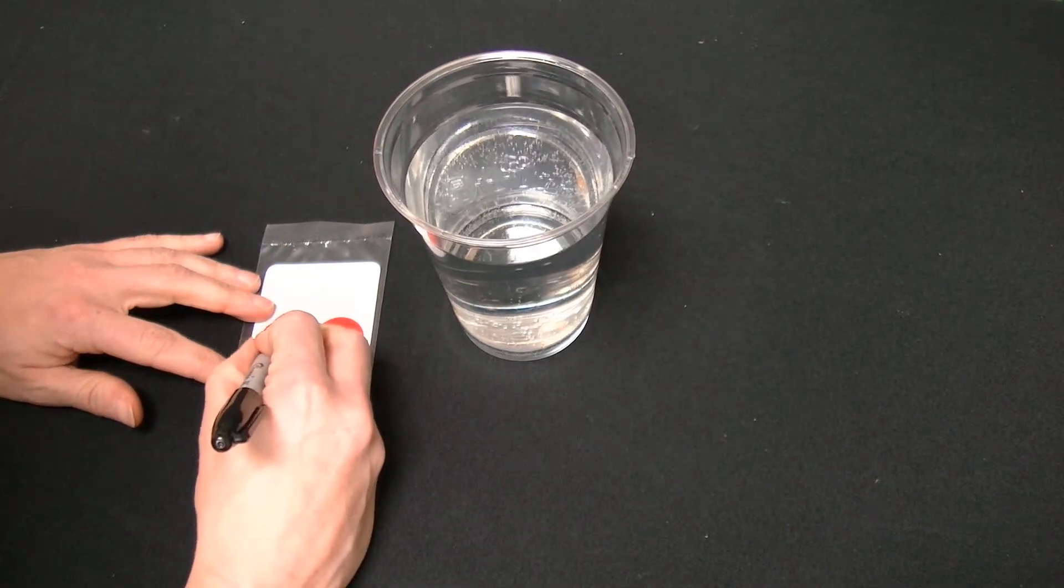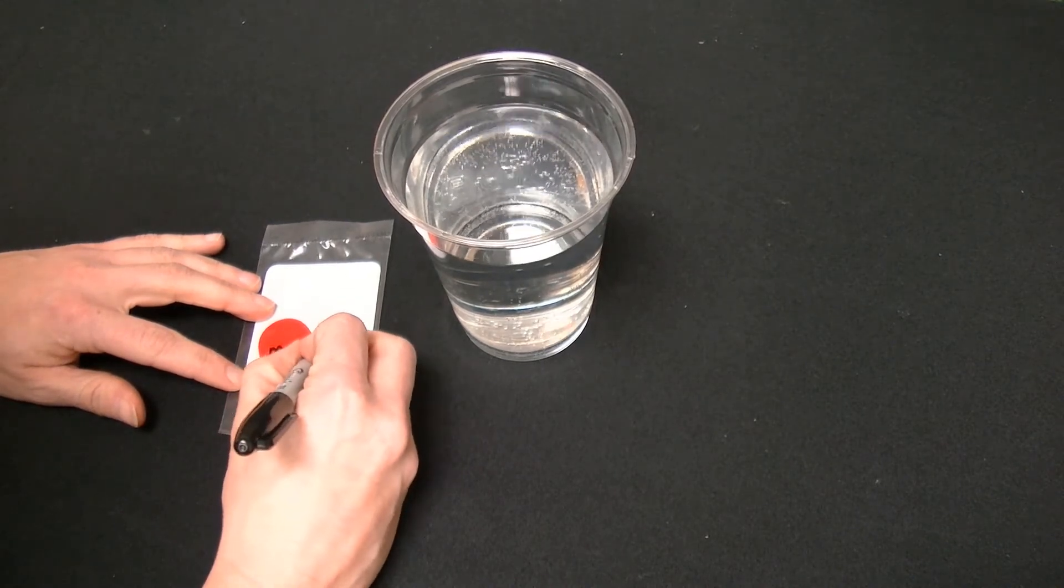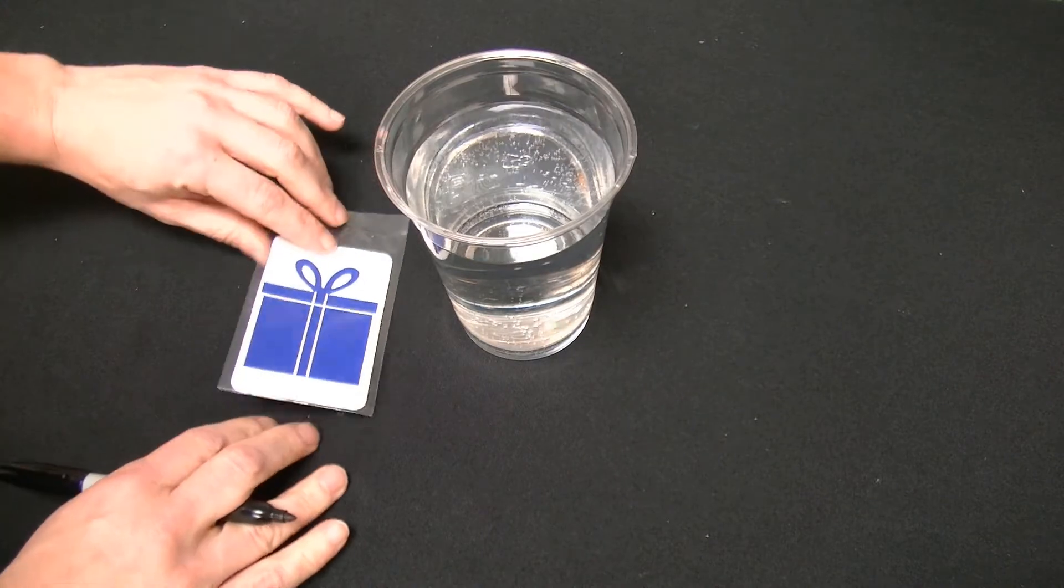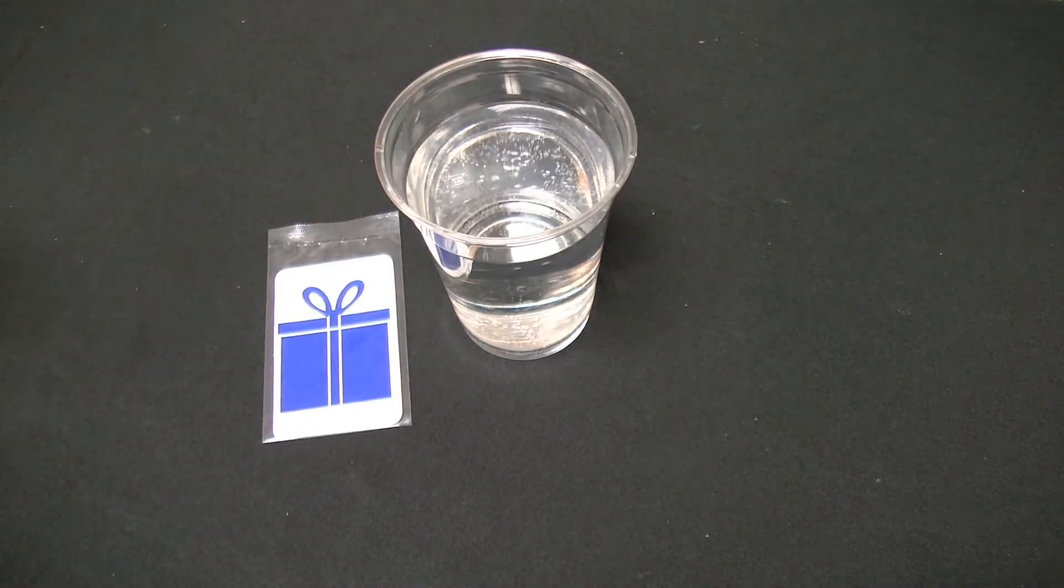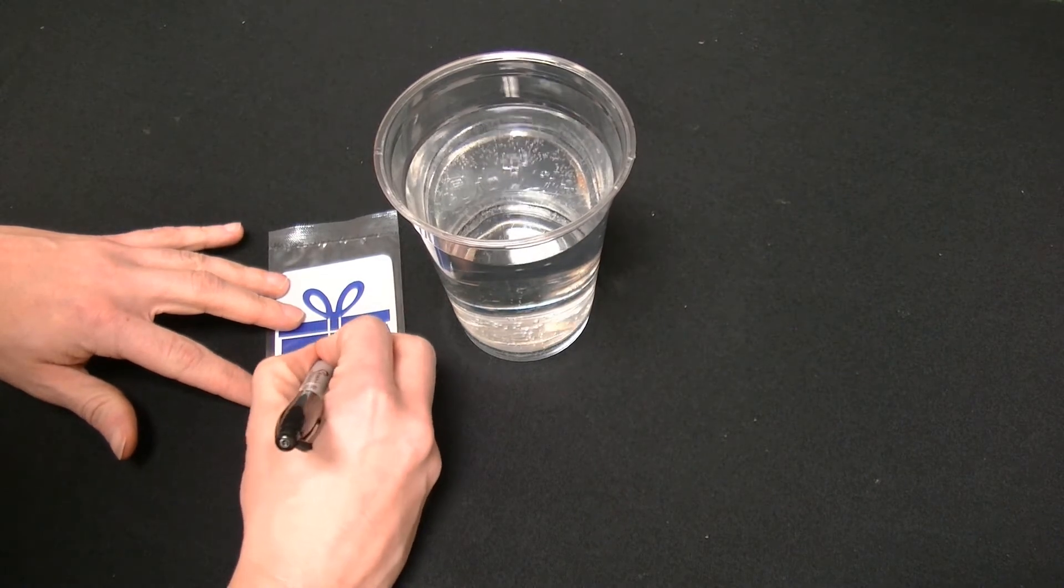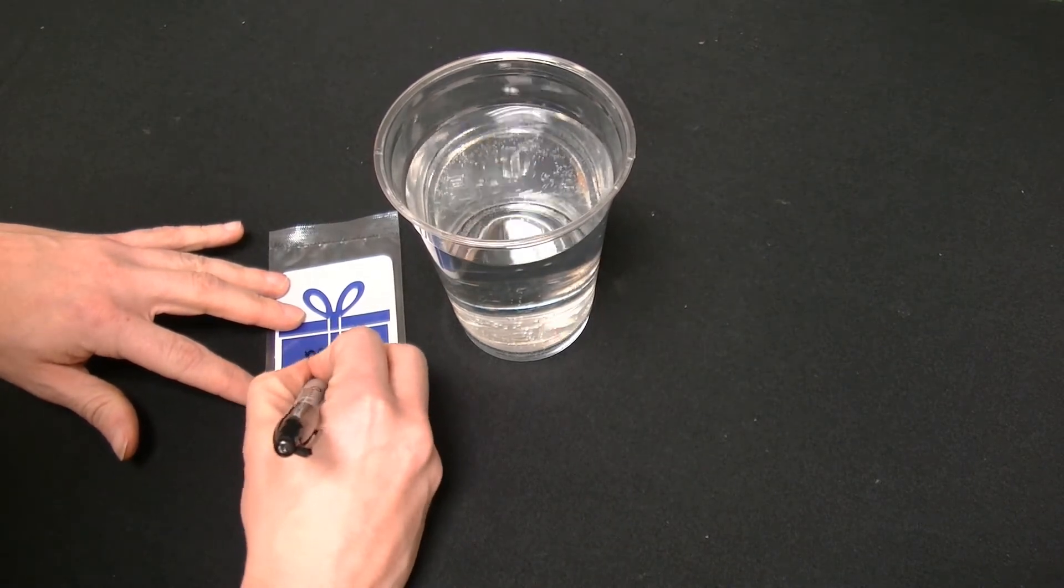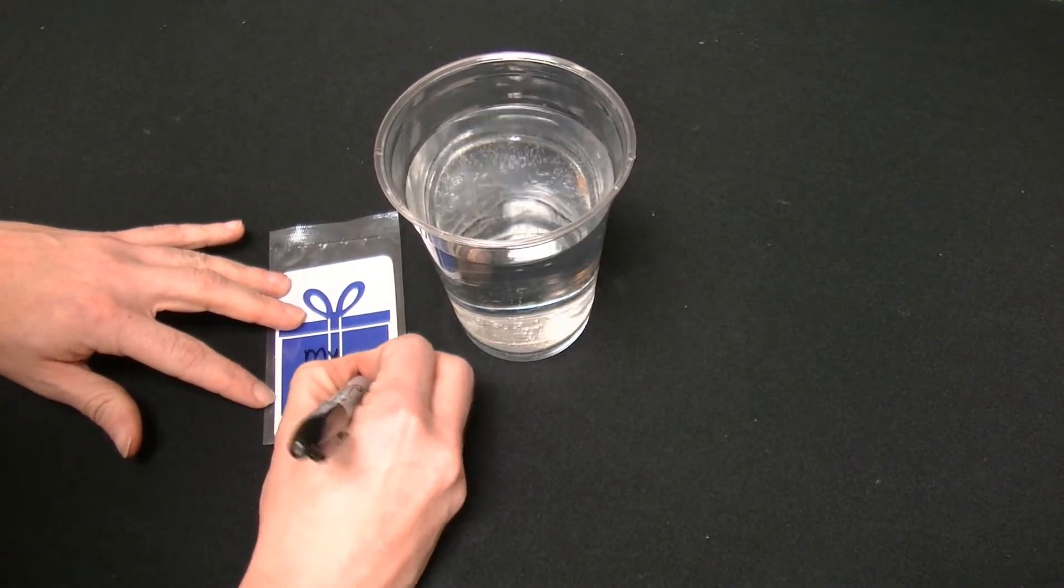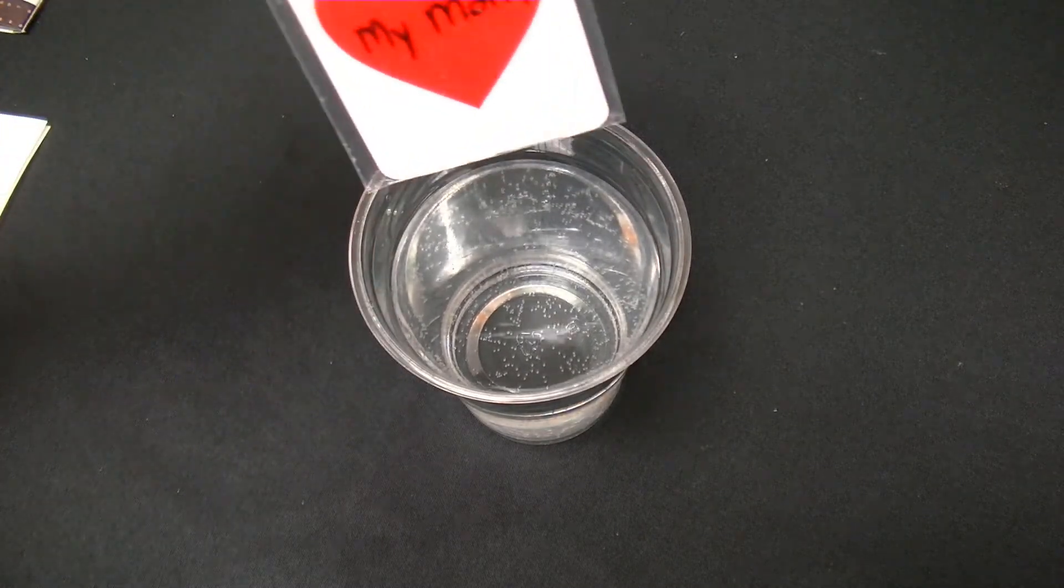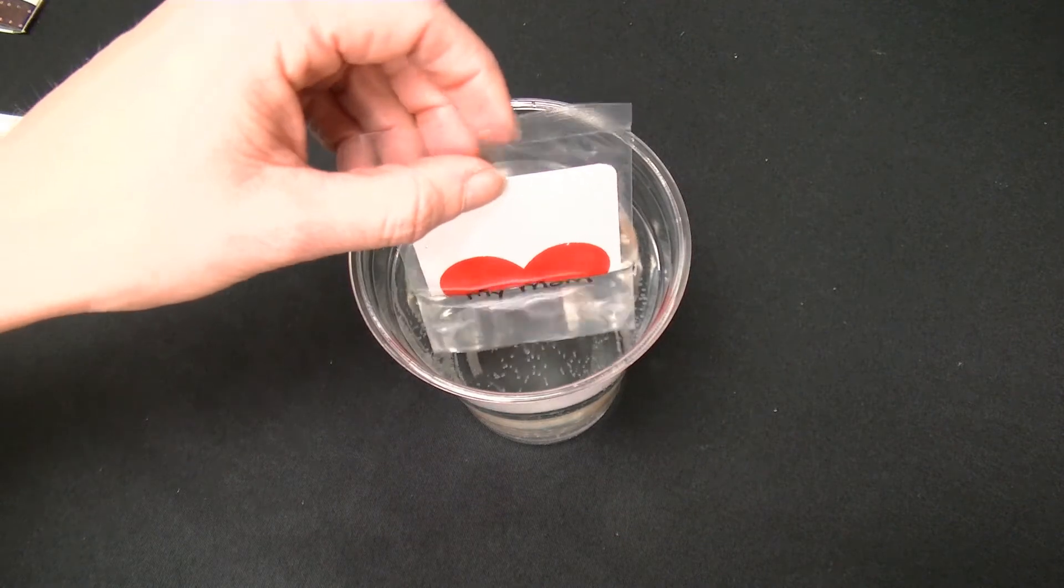On the back side in the gift box, they'll write a gift they've received from God. For example, 'my friends.' Kids will take turns placing their disappearing dippers in the water. As they do, they'll be amazed as the background images disappear, leaving only the words that they wrote.